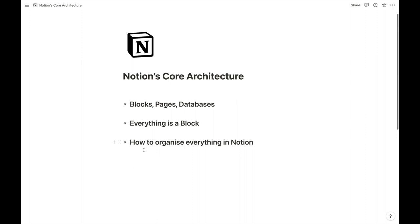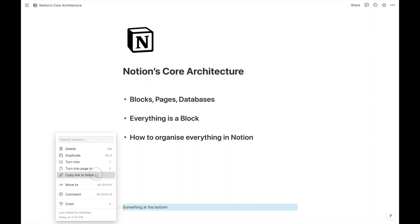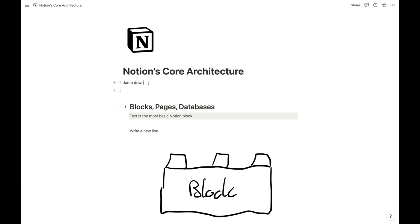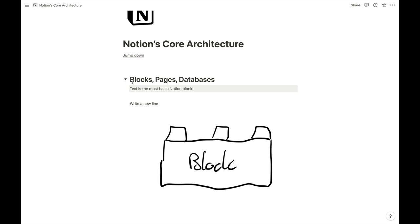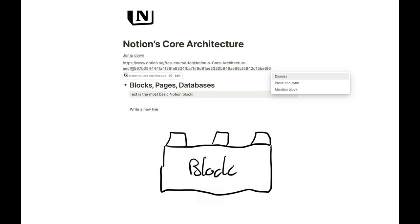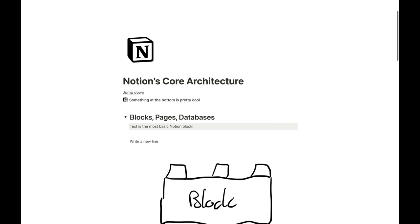You can also do it on the same page. If you have something at the bottom and want to quickly jump there, you can copy the link to the block, paste it somewhere near the top, and click it to jump to the bottom of your page. So the block is unique and we can mention it. If you paste just the link on its own in your workspace, you get the option to 'mention a block' — it will give you a preview of the text. And if you update that block's content, the mention updates automatically.